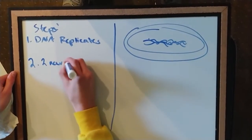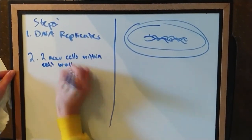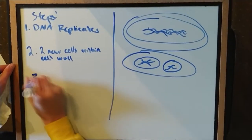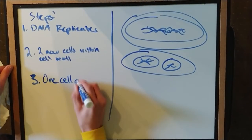Then, within the cell wall, two new cells with membranes and DNA form after the first membrane closes in. This is where the process becomes unique.